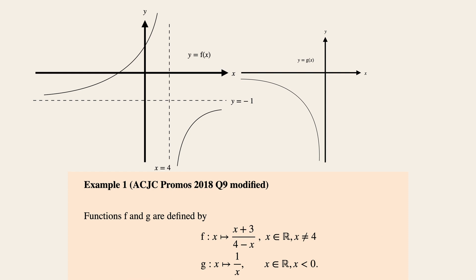So we can see that for the function f, the domain is all the real numbers except 4, and for the range of f, it equals negative infinity to negative 1, and negative 1 to positive infinity.